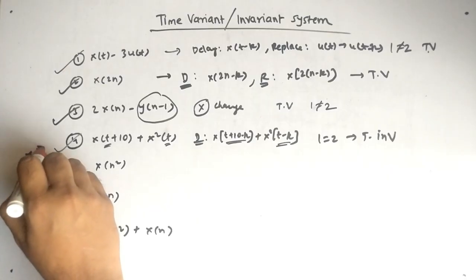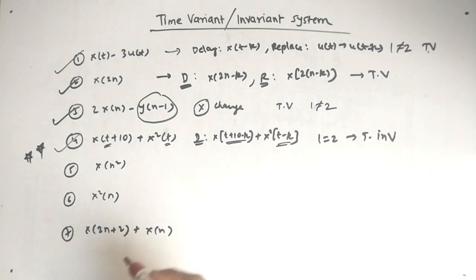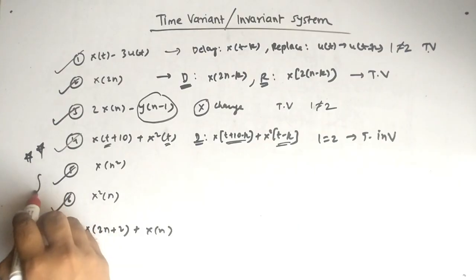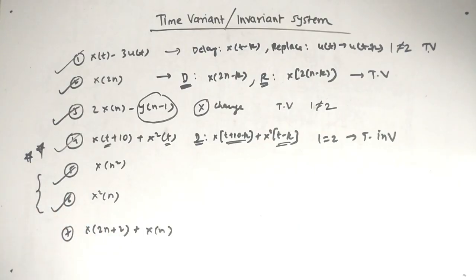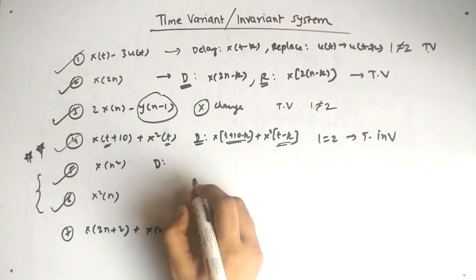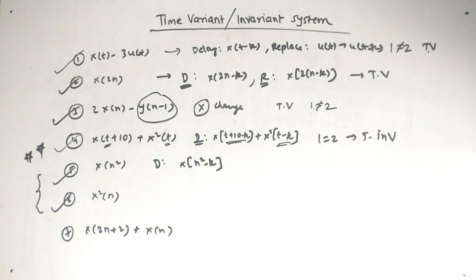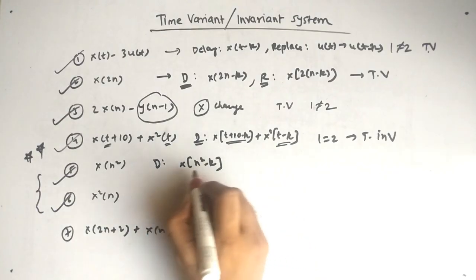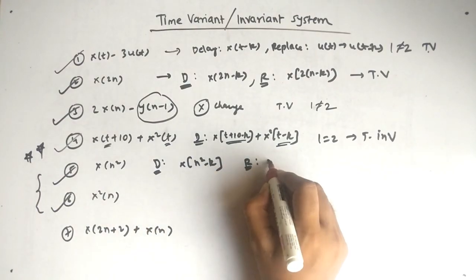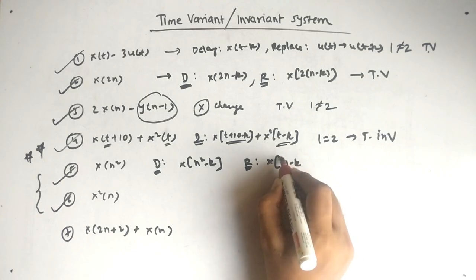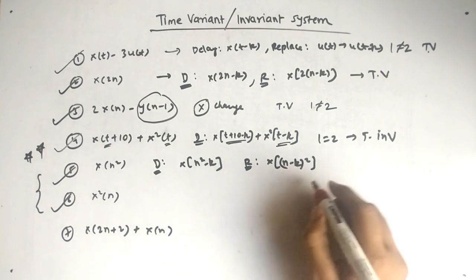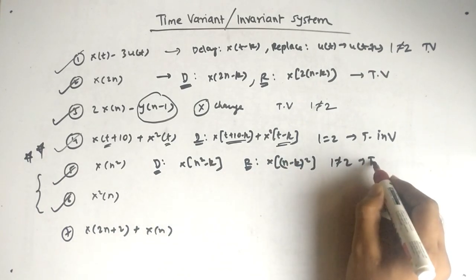You can mark that as important. Now the fifth example: x(n²). When we delay, we get x(n² − k), because it is x of n-squared, not x-squared of n. But when we replace n by (n − k), we get x((n − k)²). So one is not equal to two — it is time variant.